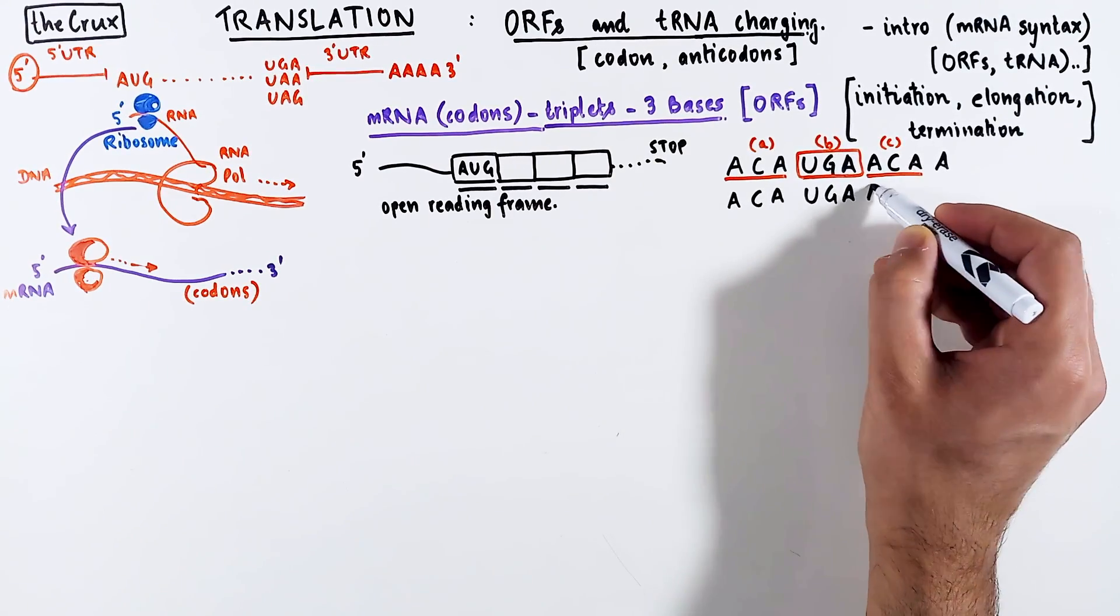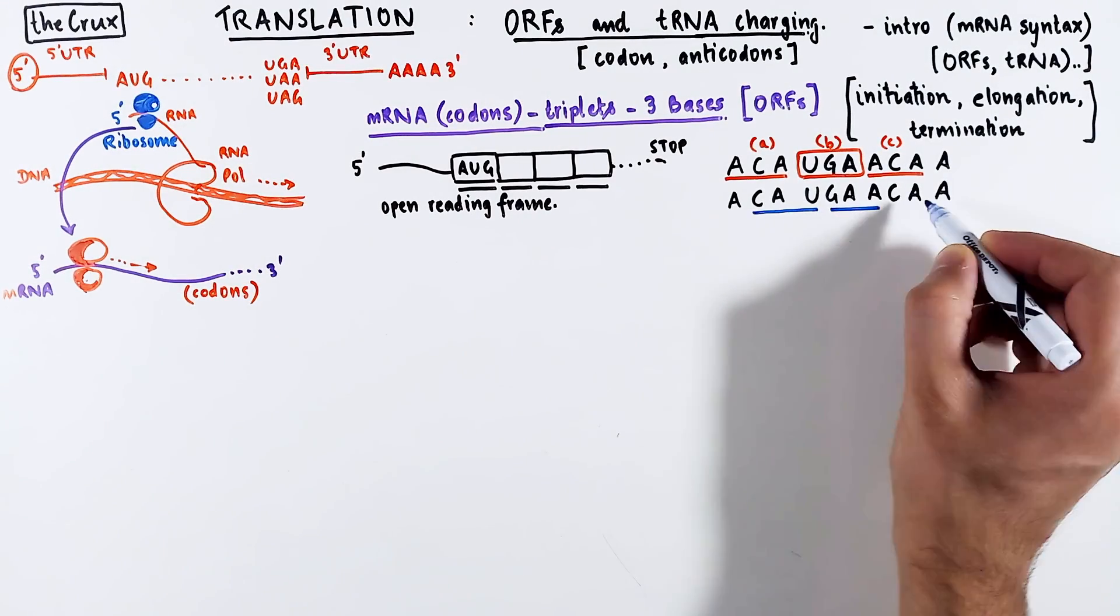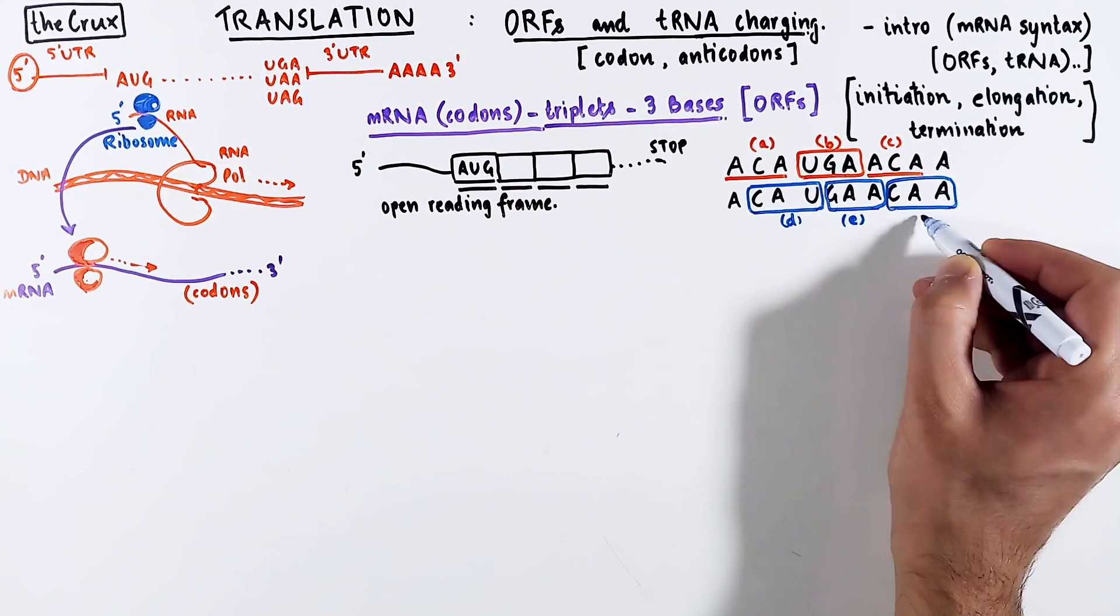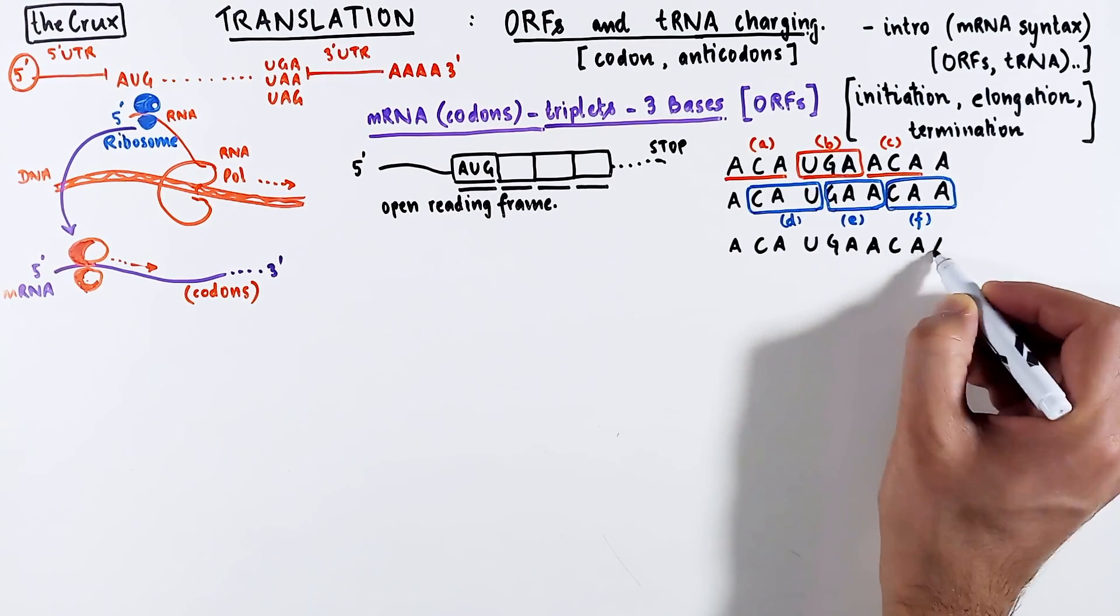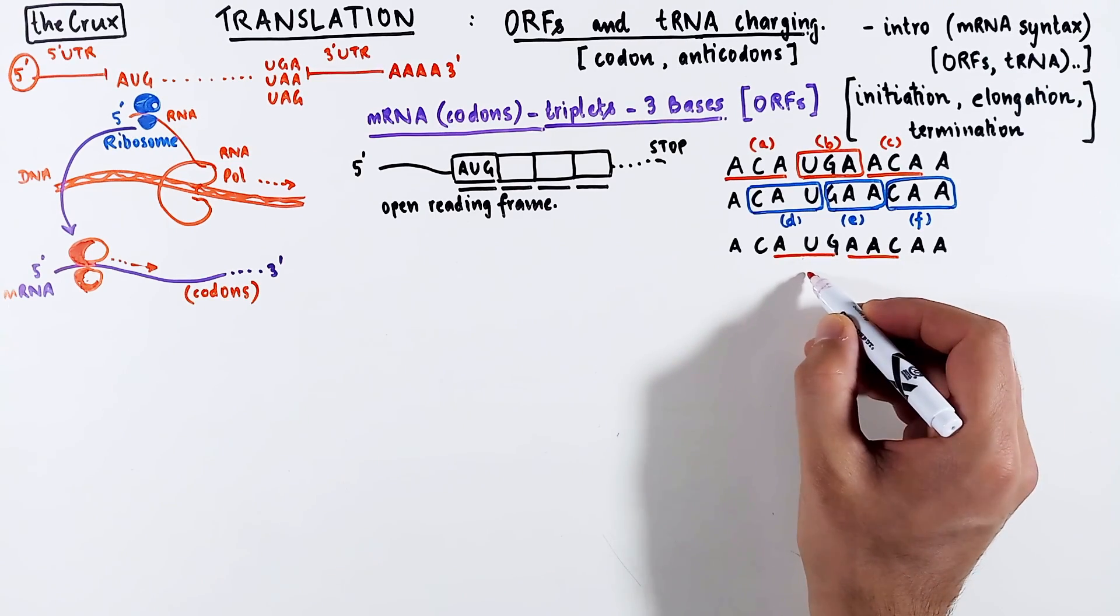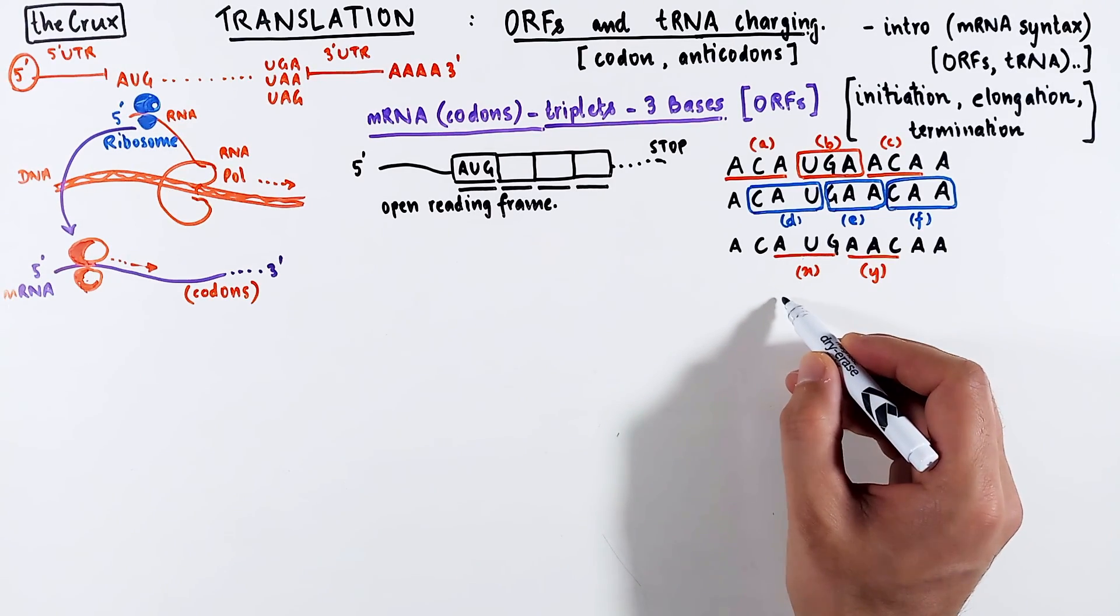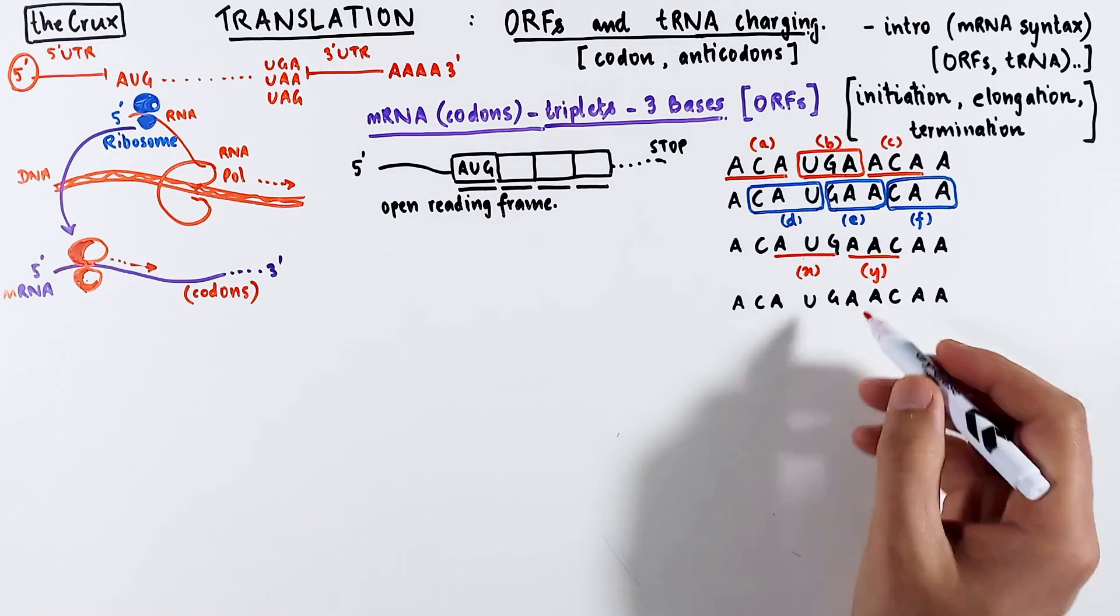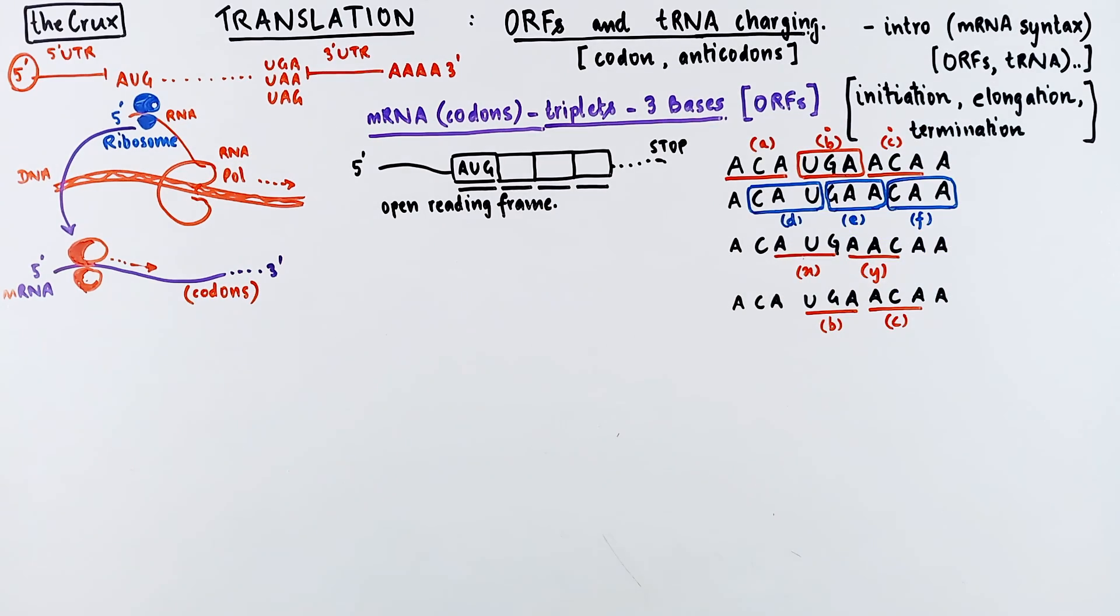Now you could imagine that this same set of sequence can be read by starting at the second position, and this would produce some amino acids as well. But they are different from the set of amino acids that result from the set of codons above. Once again, you could move one more base and start reading the same sequence. And you notice that this set of codons is different from the set of codons that we just discussed previously. We can continue this exercise of moving one more base, and now you notice that you get UGA and ACA as the codons, which give you the same as our first example.